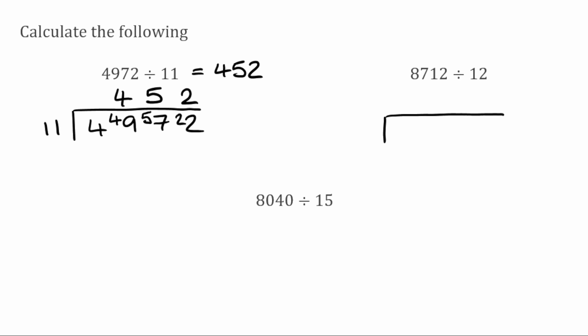For this next question we've got 8712 divided by 12. 12 doesn't fit into 8, so we carry that 8 over to the next digit. 12 fits into 87 seven times because 12 times 7 is 84, leaving a remainder of 3. Carrying that over, 12 fits into 31 twice because 12 times 2 is 24, leaving a remainder of 7. Finally, 12 fits into 72 exactly 6 times. So our answer is 726.